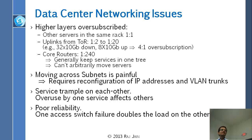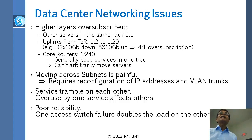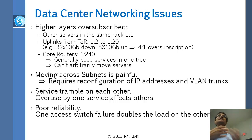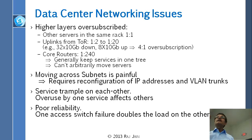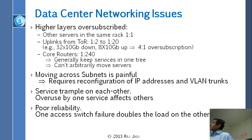Ethernet does not care about location — it just gets the packets to the right place. That is a big advantage when you want to move virtual machines around. You can move any service to any other place, and as long as you don't go to layer 3, everything works because the packet will get there. If you have to go through layer 3, then you have to find the location. So moving across subnets is painful.